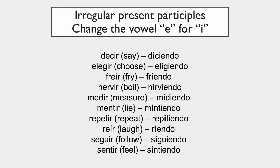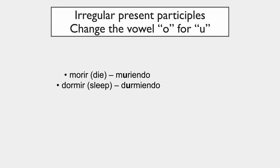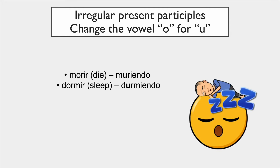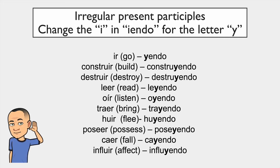You can pause the video here to look at the irregular verbs and maybe write them down. Here are more, and more — this is the last list of irregular present participles in Spanish. As you can see, some of these verbs are very common and you may want to remember them. Pause the video if you want to write them down. Now let's practice a little bit.